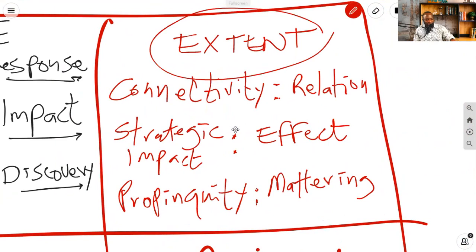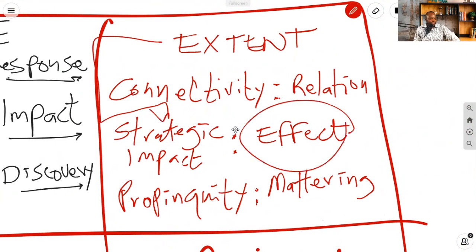The final category is extent. The extent to which a risk is related to other risks. It says, the extent to which the risk is related to other individual project risks. Where a risk is connected to many others, connectivity is high. The next one is the extent to which the risk has an effect on the company's strategic impact. It says here, the potential for the risk to have a positive or negative effect on the organization's strategic goals. Where the risk has a major effect on strategic goals, strategic impact is high.